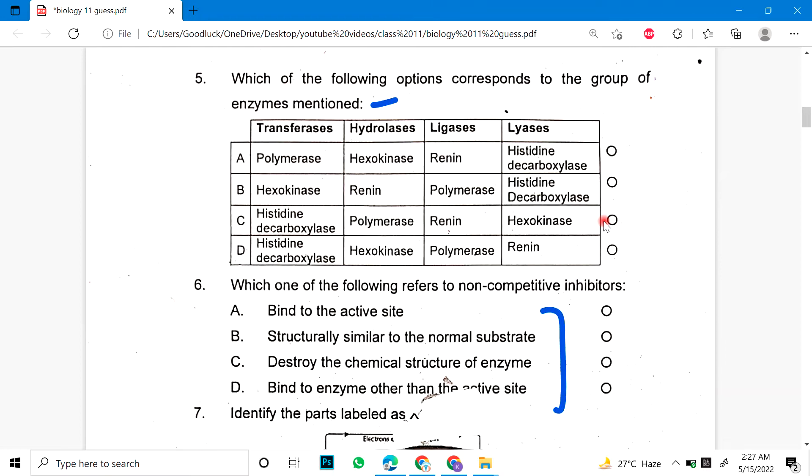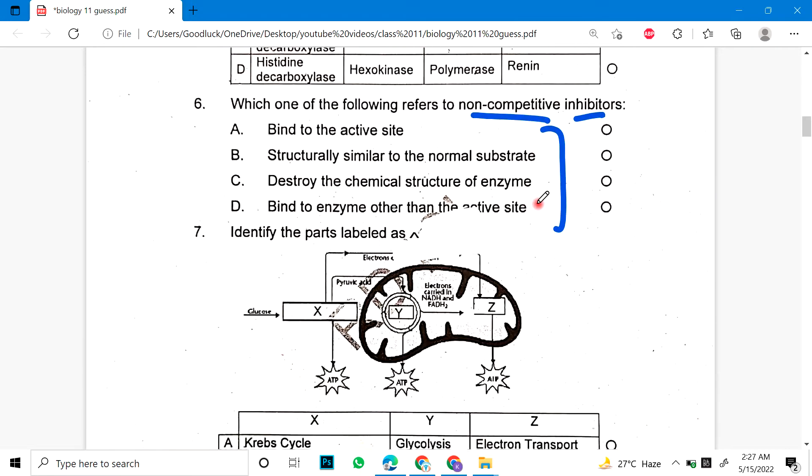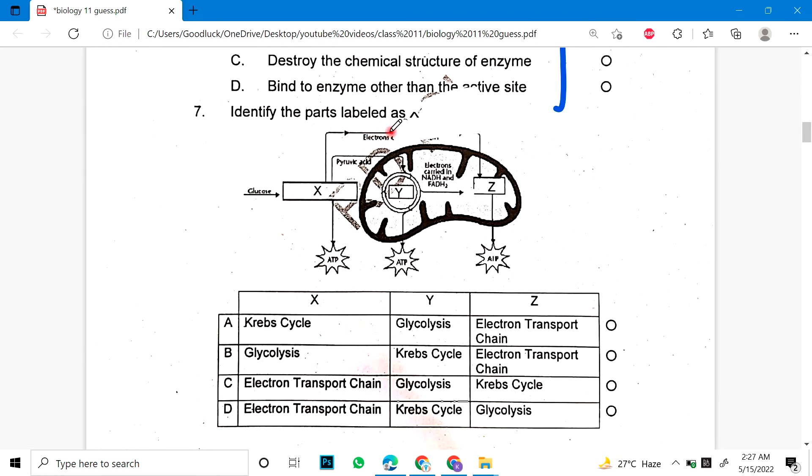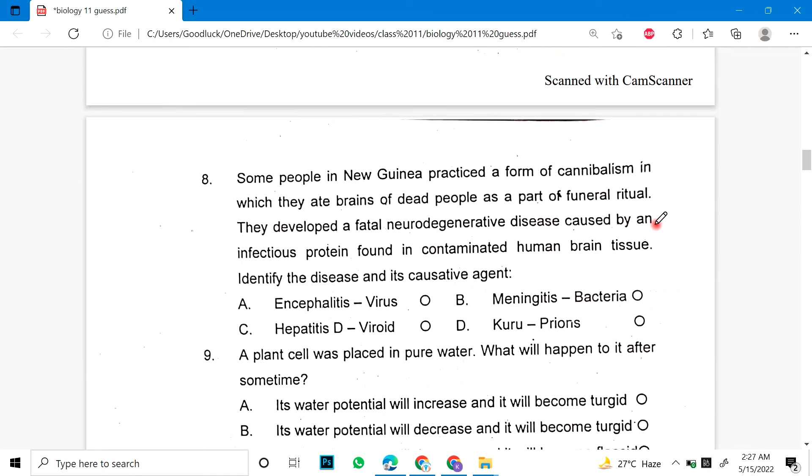Number 6: Which of the following refers to non-competitive inhibitors? These are four options. Number 7 or 8: A form of cannibalism in which they ate brains of dead people as a part of funeral ritual. They develop a fatal neurodegenerative disease caused by an infectious protein found in contaminated human brain tissue. Identify the disease and causative agent. This whole paper is SLO based, FETAL BASE. If you practice it, it's a tough paper.